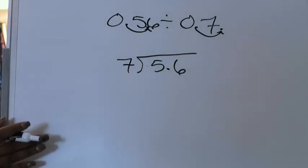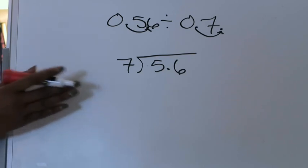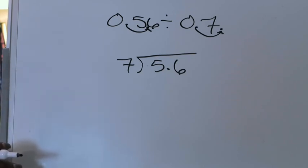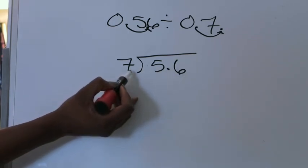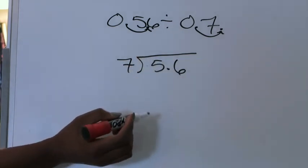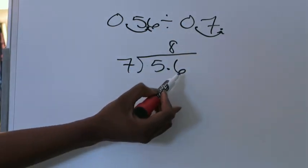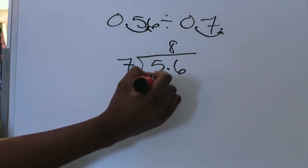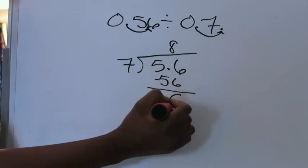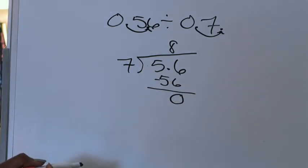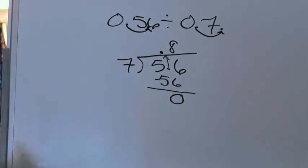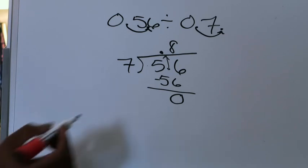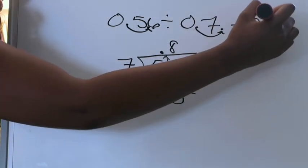Now that it's written that way and I've moved my decimal point successfully, I'm just going to go through my division steps as I would with any normal problem. If I ignore this decimal point for right now, 7 can go into 56 eight times. I'm going to make sure I put the 8 in the proper place value position. 8 times 7 is 56; 56 minus 56 is zero. The last thing I need to do is remember there was a decimal point there, so I'm going to bring it up from where it's at in the dividend — and that tells me my answer to 56 hundredths divided by 7 tenths is actually 8 tenths.